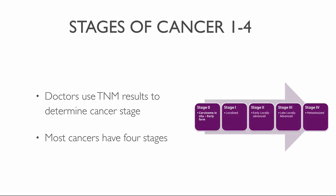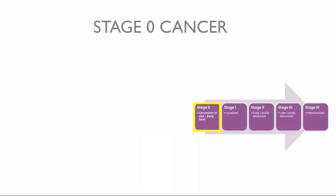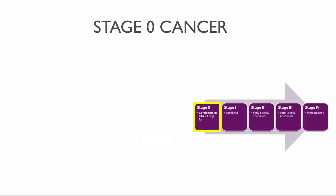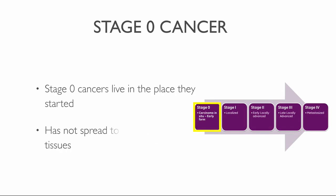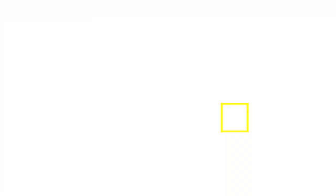Most cancers have four stages, and some cancers also have a stage zero. Stage zero describes cancer in situ, which means 'in place.' Stage zero cancers remain in the place they started and have not spread to nearby tissues. This stage of cancer is often curable.